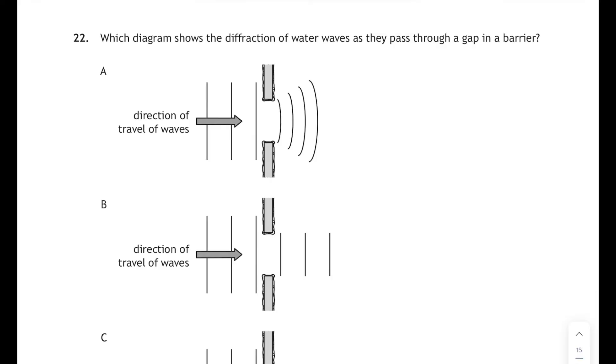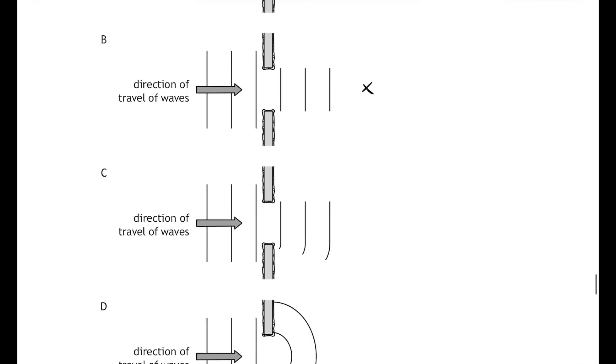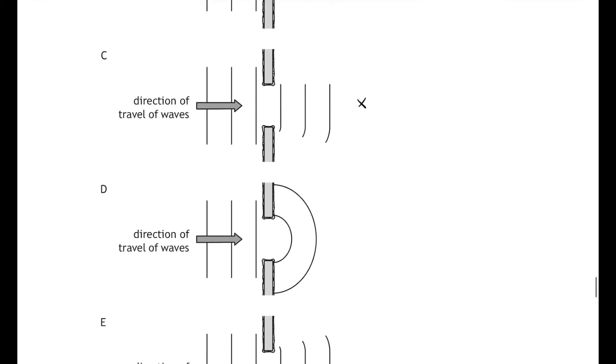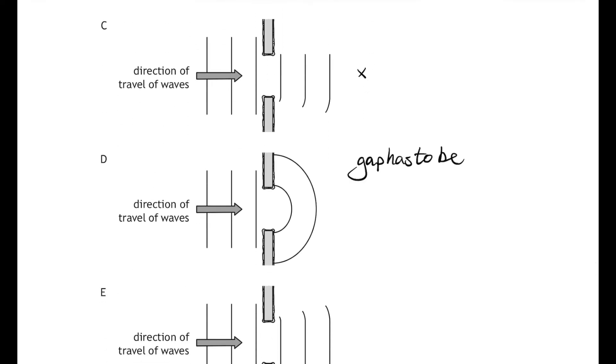Moving on then, question 22: which diagram shows the diffraction of water waves as they pass through a gap in a barrier? Well, diffraction is the bending of waves around an obstacle, or in this case, it's the bending of waves around the edges of a gap, and this is a large gap. So there shouldn't be any bending in the center region, so A is incorrect, and there's no bending at all in answer B, and it's only bending on one side in C. Answer D is incorrect because the gap has to be smaller than the wavelength of the waves for circular waves to be produced, and that's a large gap. Answer E is correct: bending at both edges, straight in the middle.